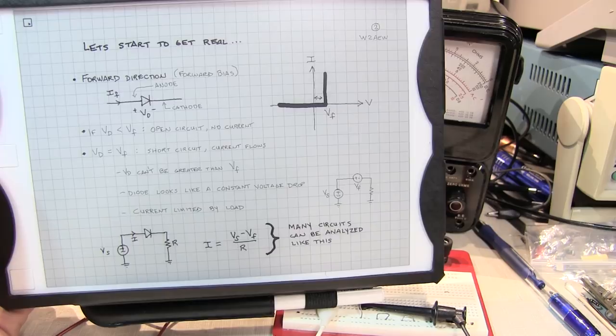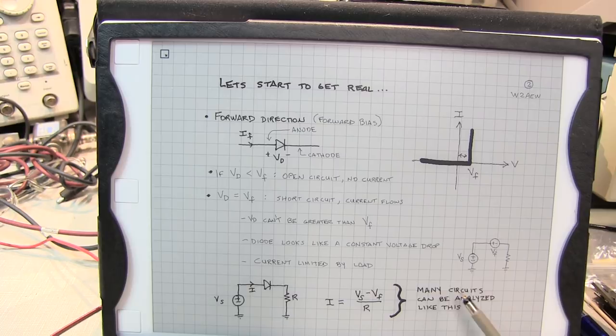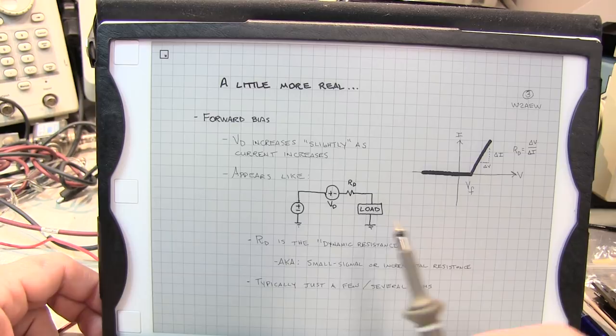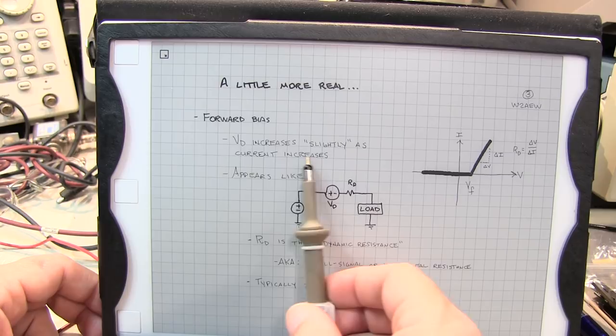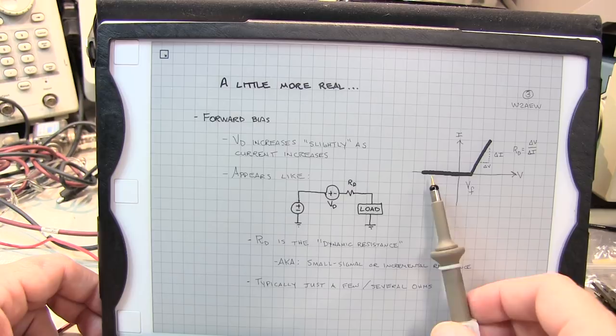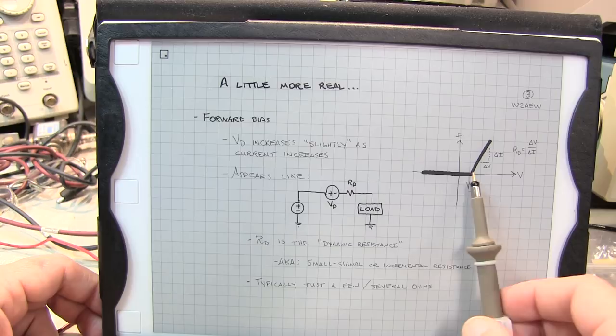Now even though this very simple model of a constant forward voltage can be used to analyze many circuits, let's get a little more real. The reality is that under forward bias the diode voltage increases slightly as the forward current of the diode increases. So the IV characteristic looks a bit like this. For reverse voltage and small forward voltage you have no current flow. Once you reach VF then you start getting current flow that is now proportional to the amount of voltage.